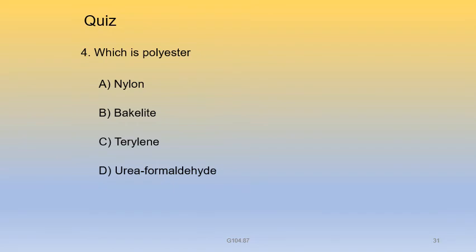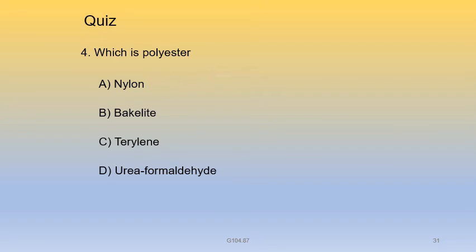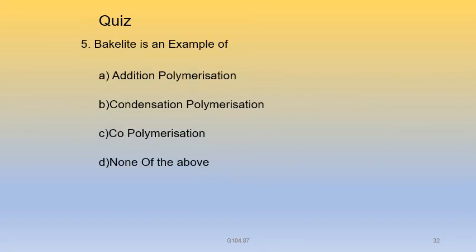Which is a polyester? Options: A. Nylon, B. Bakelite, C. Terylene, D. Urea formaldehyde. Nylon is a polyester; the remaining are plastics, not polyesters. Answer: A — nylon. Wait, the correct answer given is A (nylon is polyester), though the question asks which is polyester — terylene is actually the polyester, but the instructor confirms A.